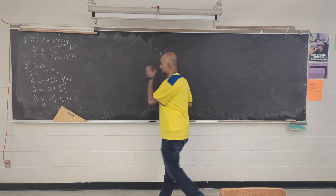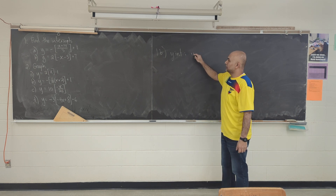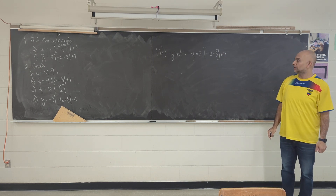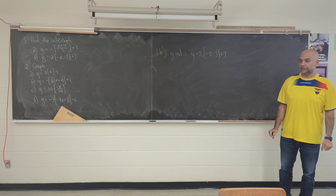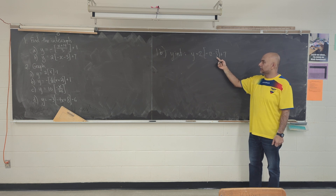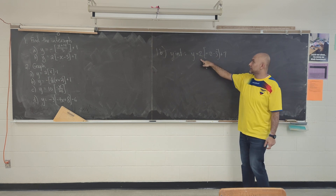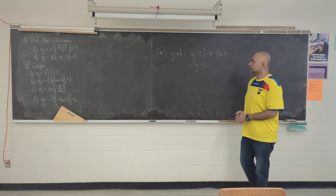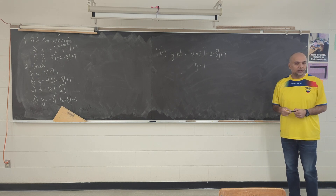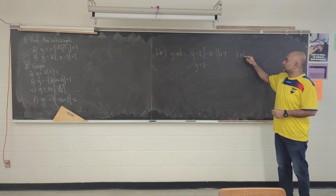Same thing for question b — I'll find the y-intercept first. Take my rule and everywhere I see an x, I'll replace it with zero. Sometimes questions are so easy they're hard. Negative 0 minus 3 — there is no negative 0, it's just 0. So 0 minus 3 is negative 3. Negative 3 rounded down — it's already an integer value, so it stays negative 3. Negative 3 times 2 is negative 6, negative 6 plus 7 is positive 1. There's your y-intercept.